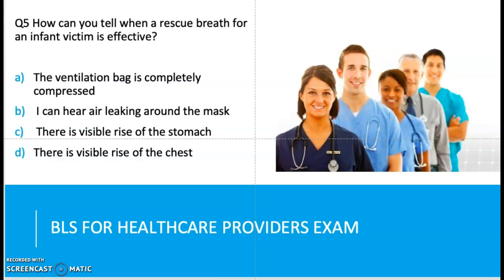Question five: how can you tell when a rescue breath for an infant victim is effective? A: the ventilation bag is completely compressed. B: you can hear air leaking around the mask. C: there is a visible rise of the chest. The correct answer is D — there is a visible rise of the chest. As you give the two breaths, if you see a rise and fall of the chest, that confirms your breaths are effective. If you don't see rise and fall, there may be an air leak and you may need to reposition the mask.